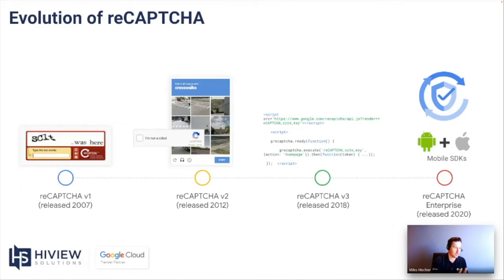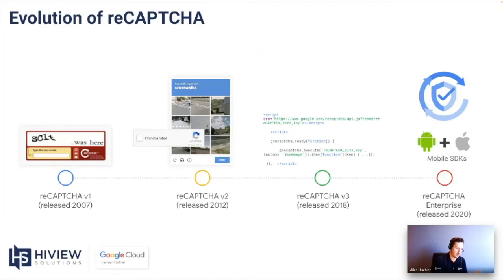Version three also offers actions, which allow a developer to specify a name in every place where ReCAPTCHA is executed. This gives you a detailed breakdown of data for the top 10 actions via the ReCAPTCHA admin console, and shows an adaptive risk analysis based on the context of that particular action, making it clear what happened and what you need to do next. In summary, version three is frictionless for users, relies on adaptive risk analysis, and offers actions.